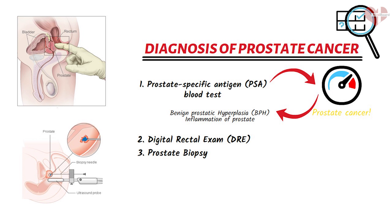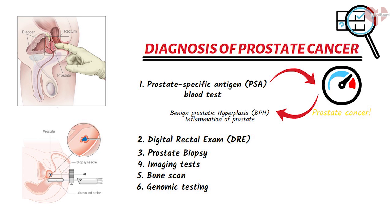Other diagnostic tests that may be used to assess prostate cancer include imaging tests, such as a transrectal ultrasound, magnetic resonance imaging (MRI), or computed tomography (CT) scan, which can provide detailed images of the prostate gland and surrounding tissues; bone scans, which can detect the presence of cancer that has spread to the bones; and genomic testing, which can help predict the aggressiveness of the cancer and guide treatment decisions. The choice of diagnostic tests will depend on several factors, such as the patient's age, overall health, and the extent of the suspected cancer.